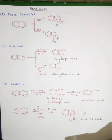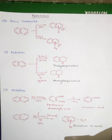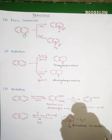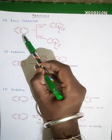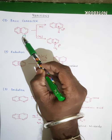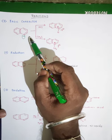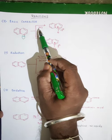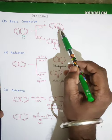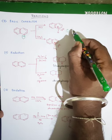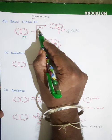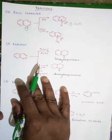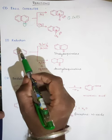Now for the reactions of quinoline — first is basic character. The lone pair of electrons on the nitrogen is not involved in ring delocalization, so it is available to donate to electrophiles. Hence quinoline shows basic character. When treated with inorganic acids like HCl or CH₃I, it forms quaternary salts: H⁺ attacks on N to give N⁺Cl⁻.